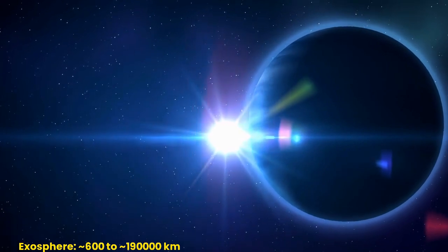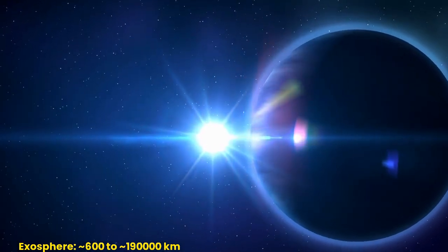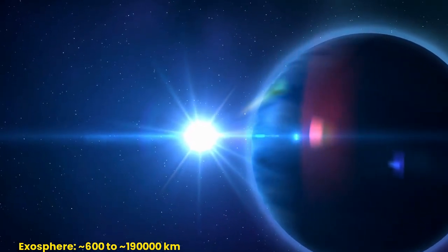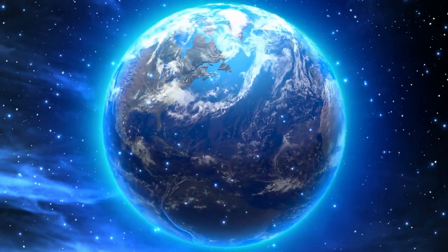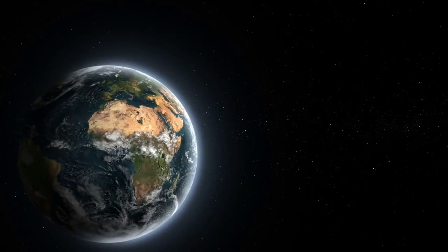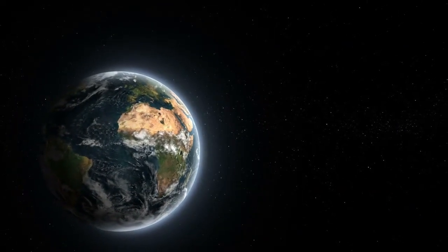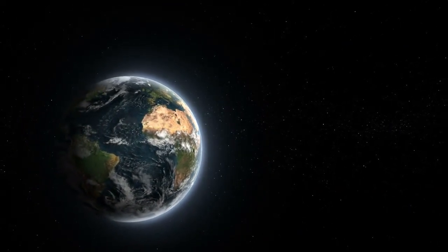Some scientists say it is 190,000 kilometers. It's a very thin layer, and the air is so spread out that it's almost like a vacuum. This is where the Earth's atmosphere gradually blends into the vacuum of space.